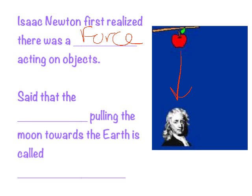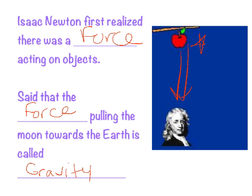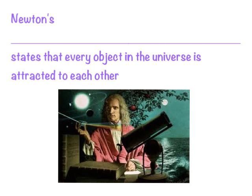I'm not sure if it's really true, but hey, it works. Isaac Newton said that the force pulling on the moon — pulling the moon towards the Earth — is called gravity, and that's what caused the apple to fall and hit him on the head. Newton was a very bright man and he came up with laws that explain why these different phenomena are happening.